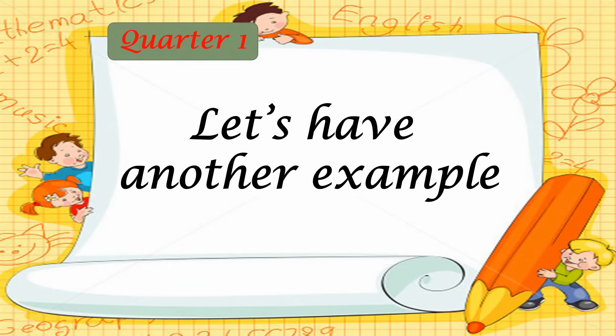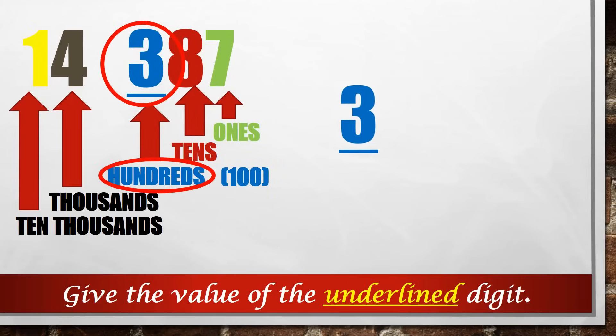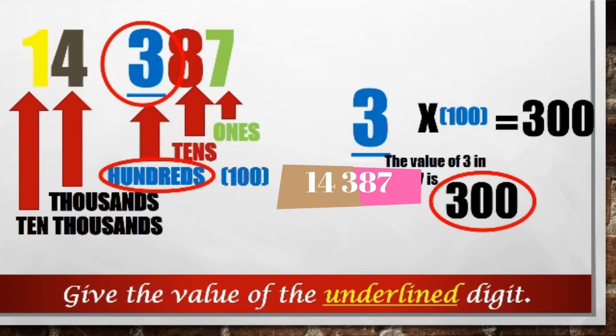Let's have another example. To get the value of 3 in 14,387, you need to follow certain steps. Step 1: determine the place value of each digit — ones, tens, hundreds, thousands, ten-thousands. 3 times 100 is 300. The place value of 3 in 14,387 is hundreds, and its value is 300.